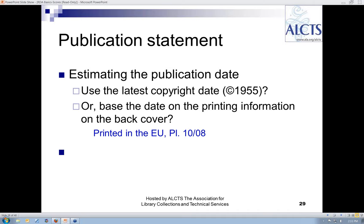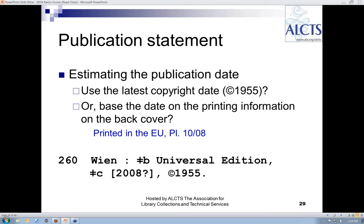Having determined the place of publication and the publisher, the remaining element is the date of publication. As with many scores, no date of publication appears. I have three options: supplying 'date of publication not identified' in square brackets, estimating the publication date based on the latest copyright date, or inferring the date from the printing date found on the back cover. Using cataloger's judgment, I chose the latter option, while also deciding to record the latest copyright date in my 260 field, per RDA 2.11.